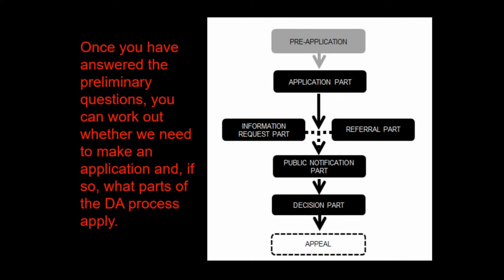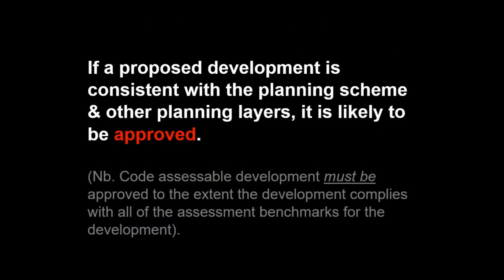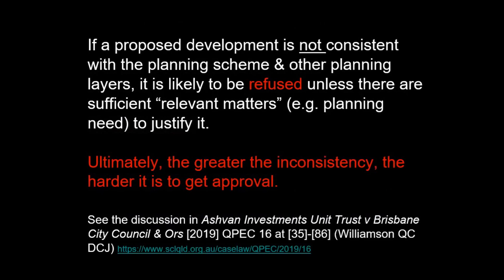There's a lot more detail in the Development Assessment Rules, available online. The test for decisions can be found in sections 45 and 60 of the Planning Act, and a useful reference is the 2019 decision in Ashvan Investments and Brisbane City Council (Judge Williamson), available on the court's website. The basic rule is: if a proposed development is consistent with the planning scheme and other planning layers, it's likely to be approved. If it's not consistent, it's likely to be refused unless there are sufficient relevant matters to justify approval. The greater the inconsistency, the harder it is to get approval.